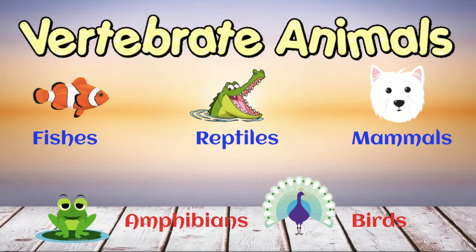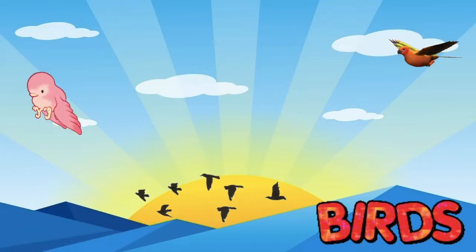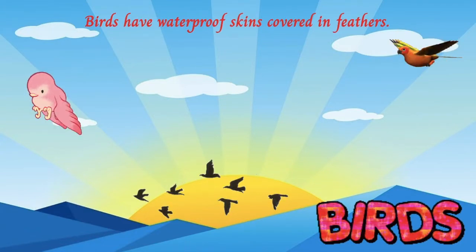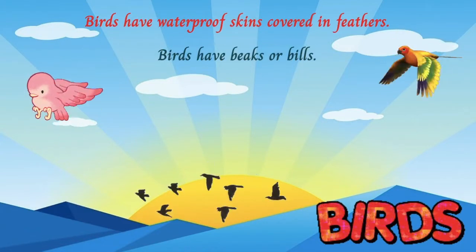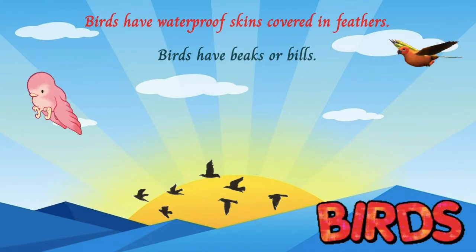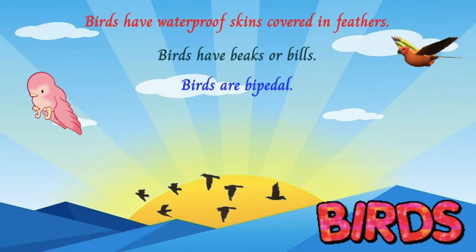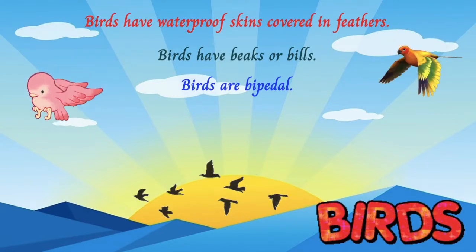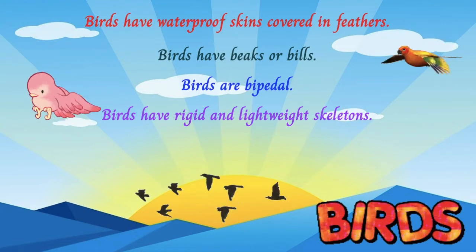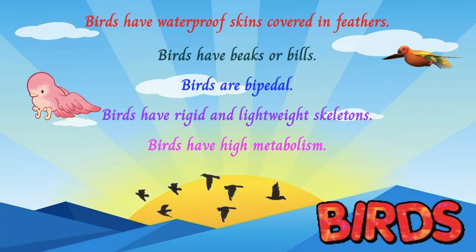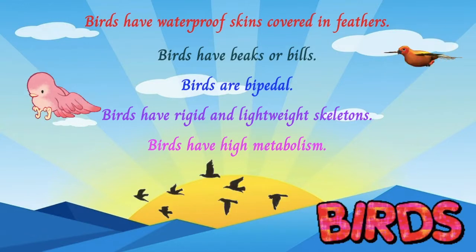Now, down to our last vertebrate group: birds. Birds have waterproof skin covered in feathers. They don't have teeth; instead, they have beaks or bills. They are bipedal, meaning they can walk on two legs only. They have rigid and lightweight skeletons. Birds have a high metabolism that quickly turns their food into usable energy.